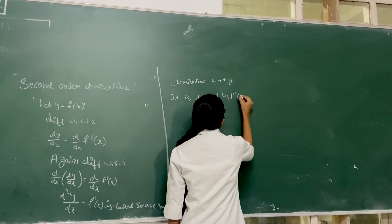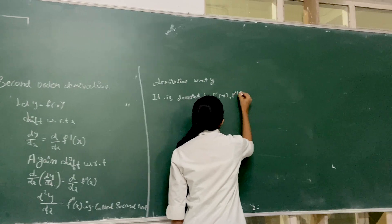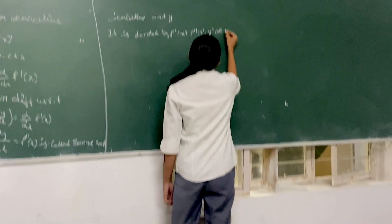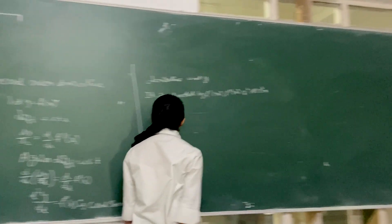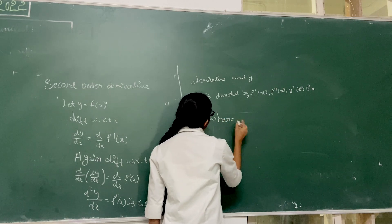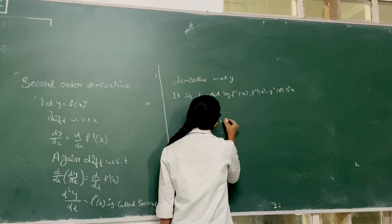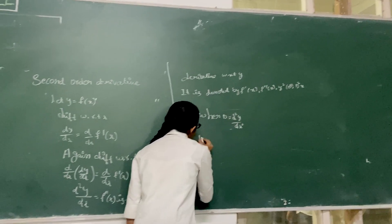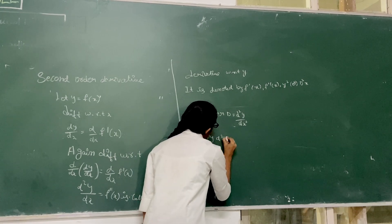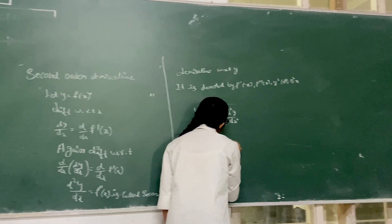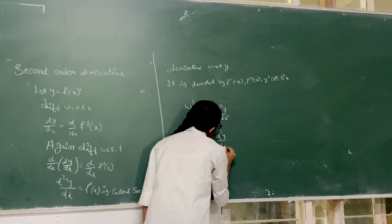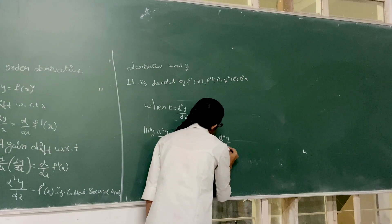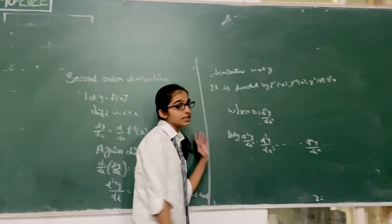The second order derivative is written as f dash x, f double dash x. The notation is d squared y by dx squared. This is the second order derivative.